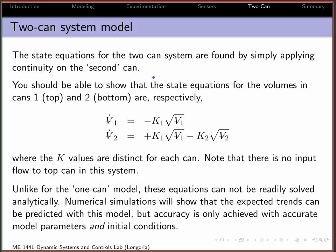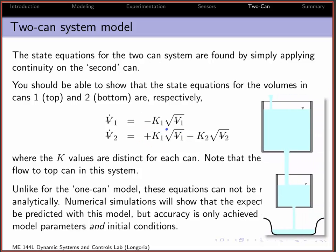Basically, all we do is apply continuity on the second can. Now you've got the volume Q1 from the bottom, which is this term here, coming into the bottom can, so the rate of change of volume in the second can is just the flow coming out of the top can, less the one that's leaving the bottom can. So convince yourself that this model makes sense to you.